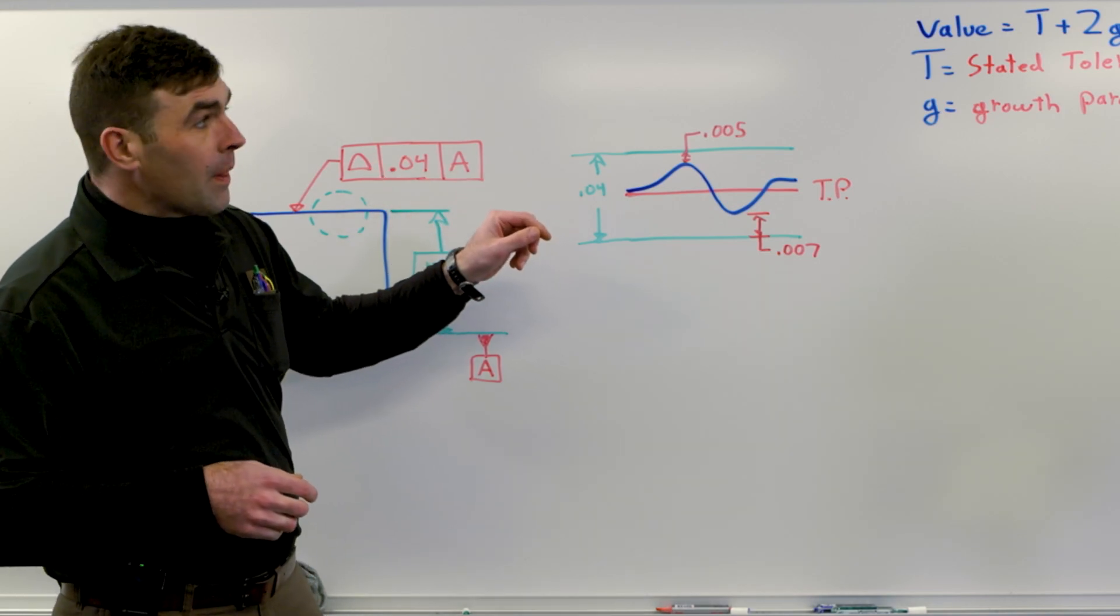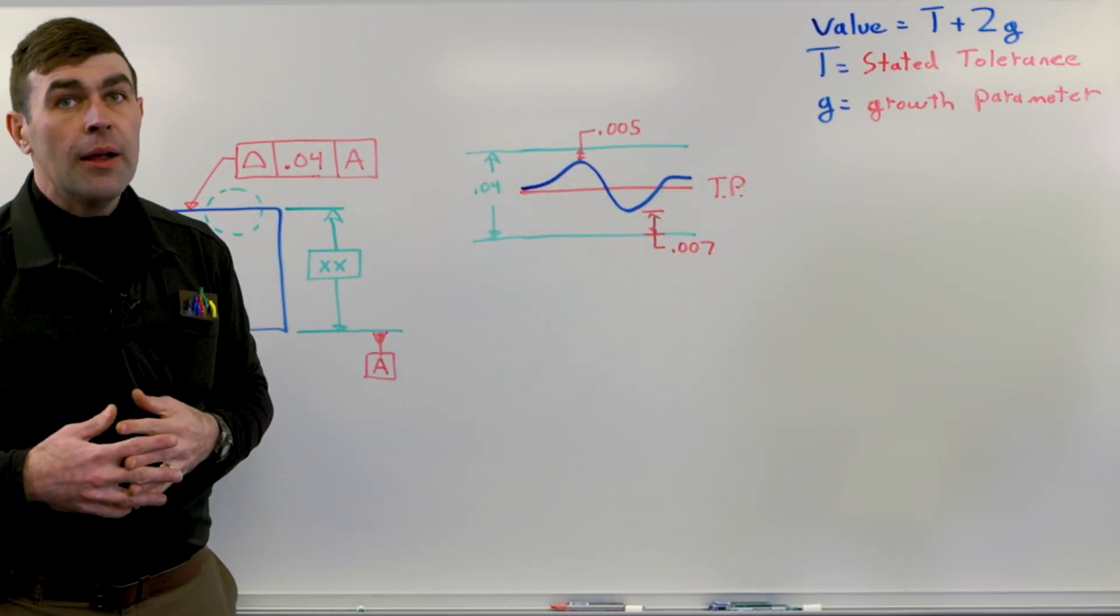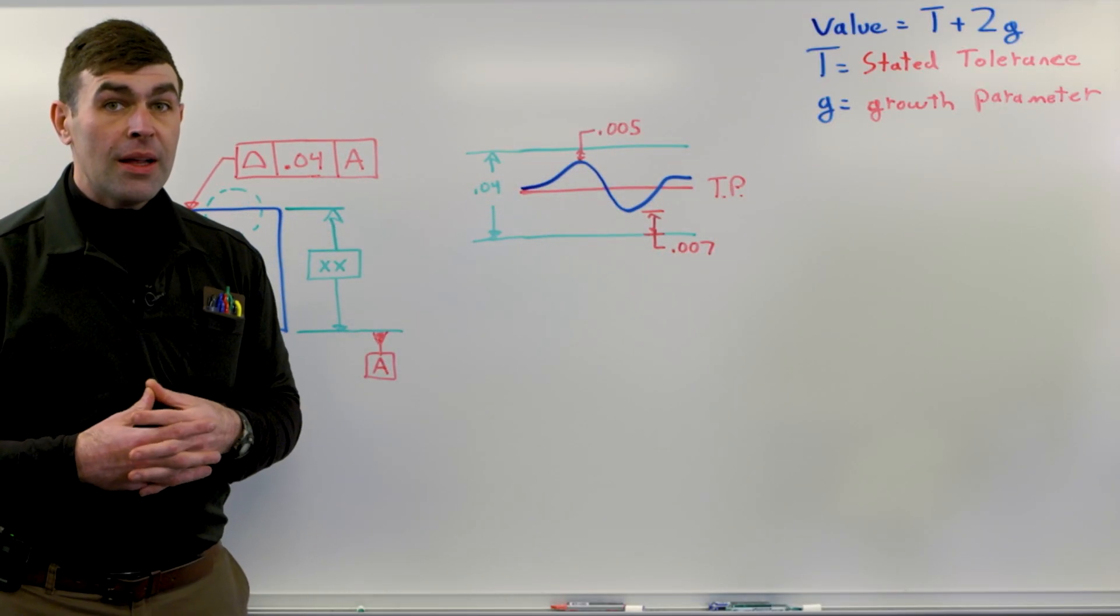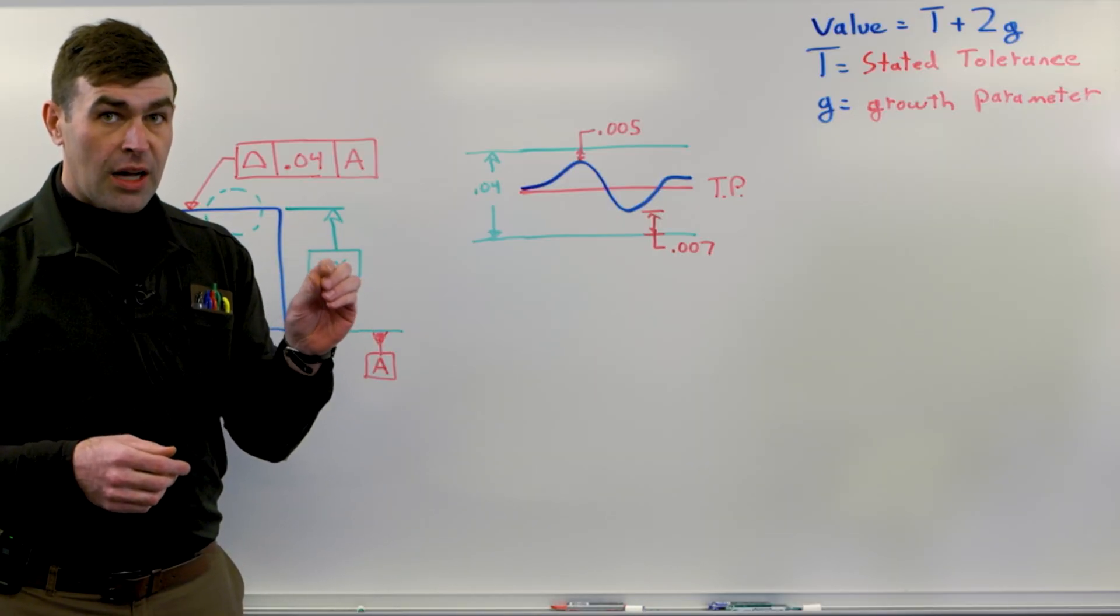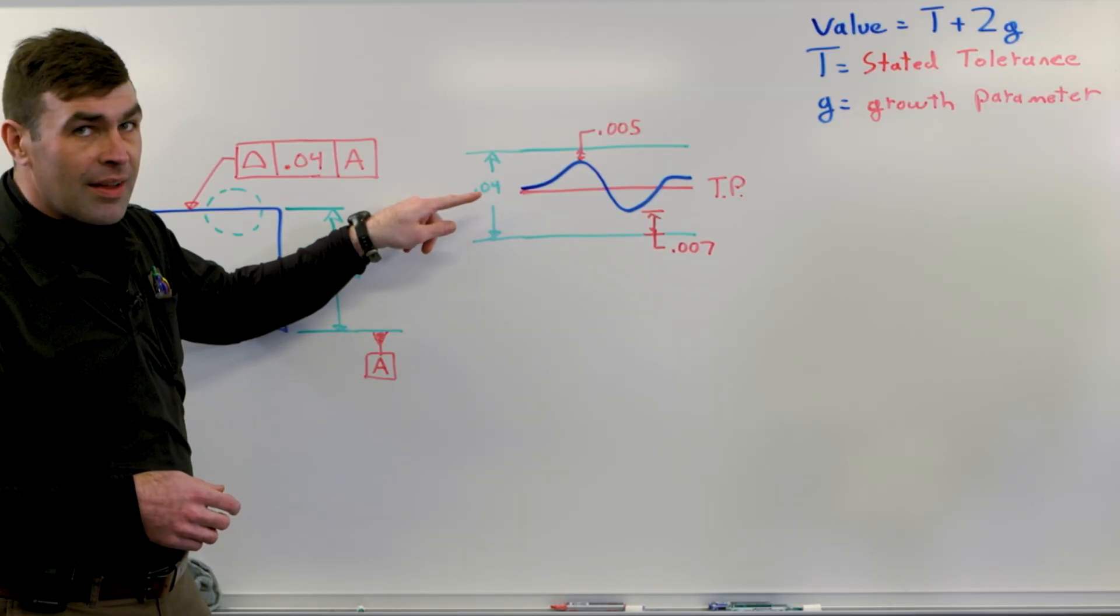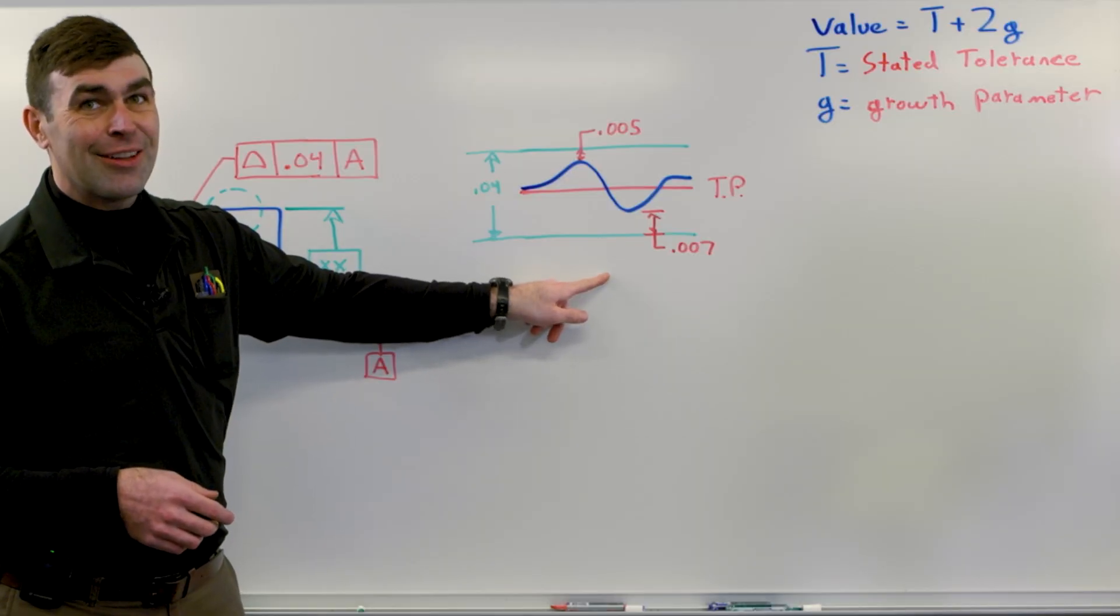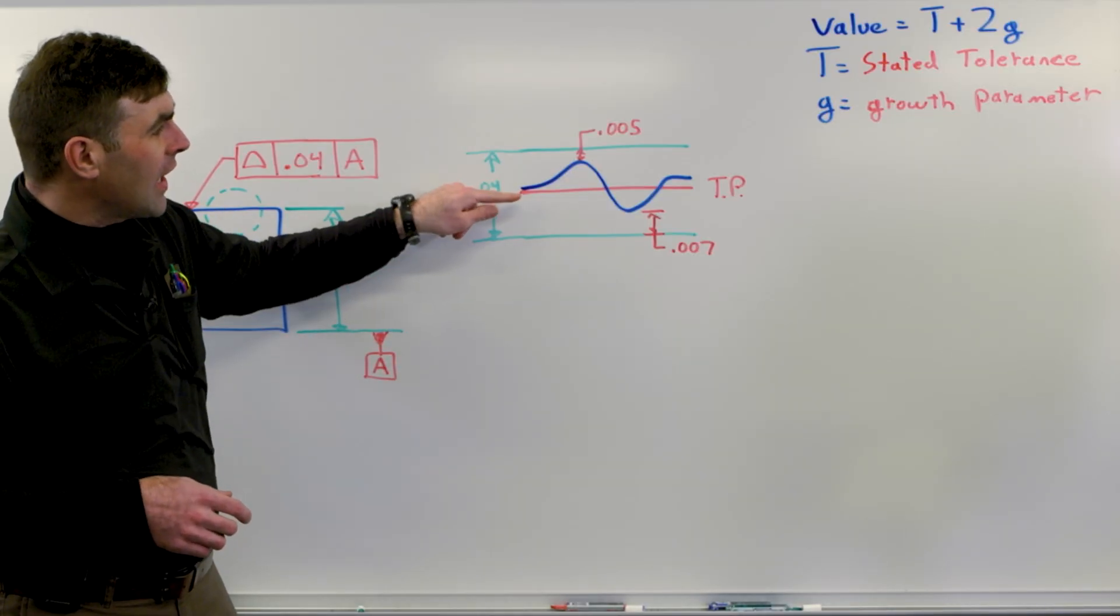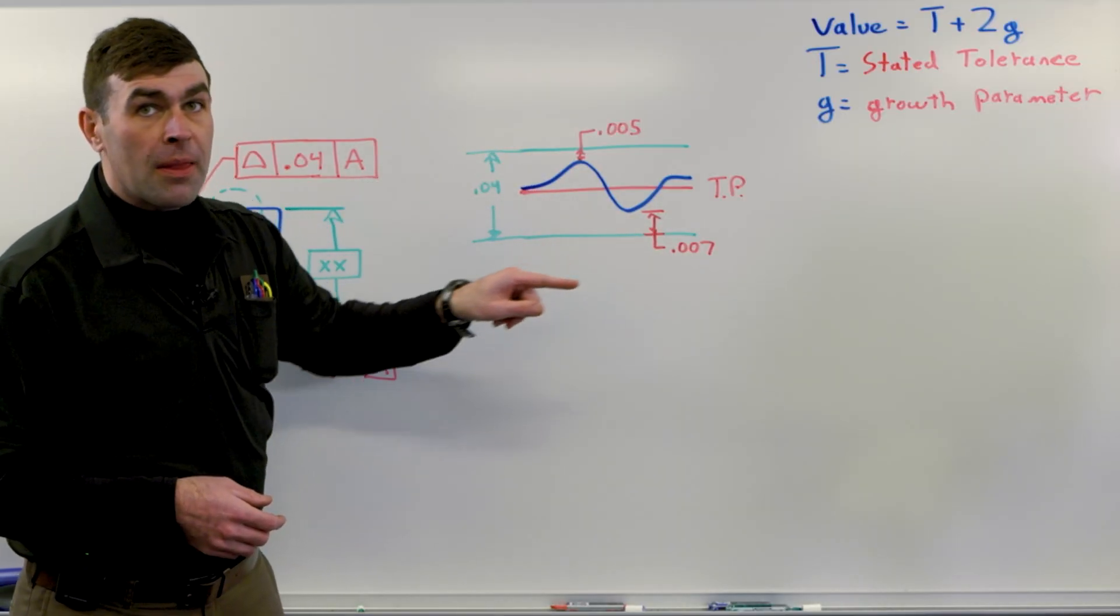What we're going to do is find this variable here called the growth parameter. The growth parameter is the closest the point comes to the tolerance zone boundary if it's inside of it, or the furthest away it is if it's outside of the tolerance zone boundary. So in our case, we've got five thousandths and seven thousandths.